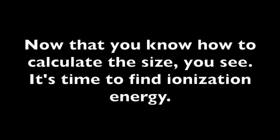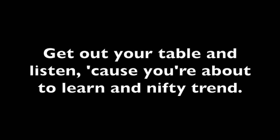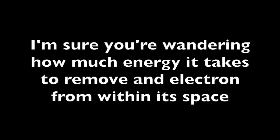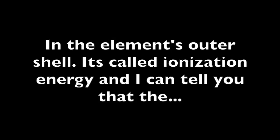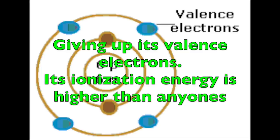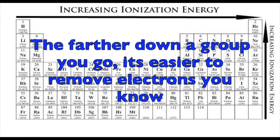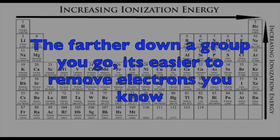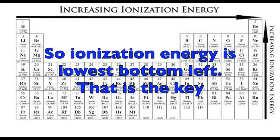Now that you know how to calculate the size, it's time to find ionization energy. Get out your table and listen, cause you're about to learn a nifty trend. How much energy it takes to remove an electron from within its space — that's ionization energy. The higher and farther to the right, the elements put up a bigger fight, giving up their valence electrons — ionization energy is higher.